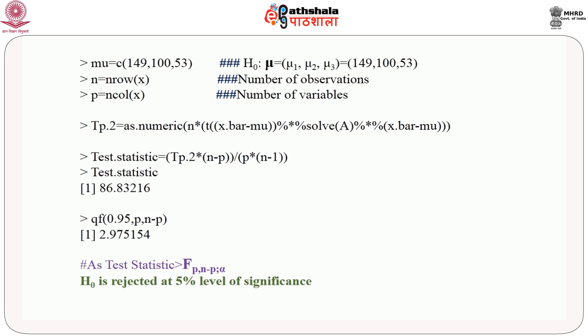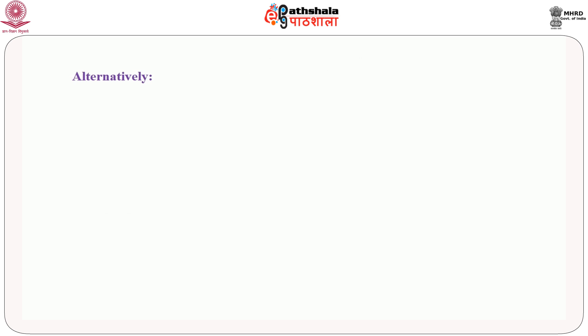Since the value of the test statistic (86.83) is greater than the cutoff point (2.975), we can conclude that H₀ is rejected at the 5 percent level of significance.